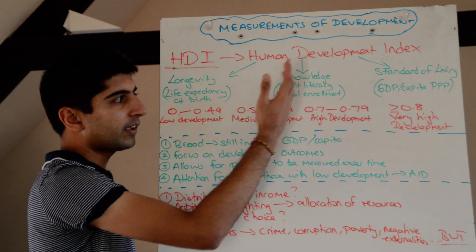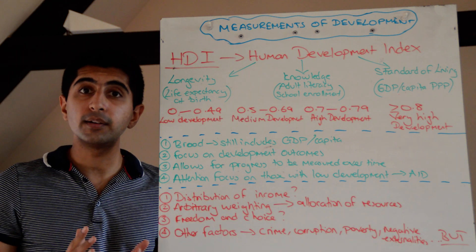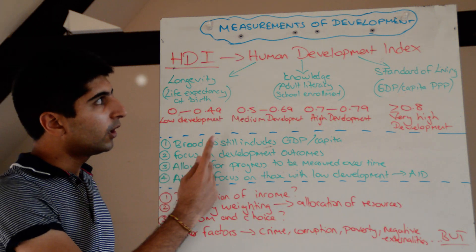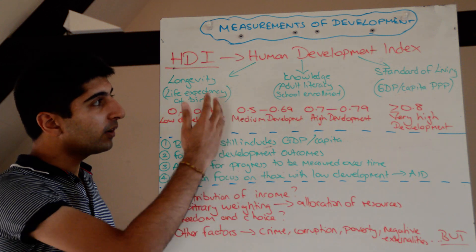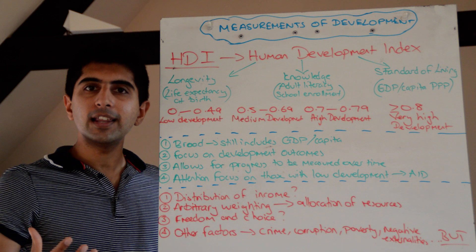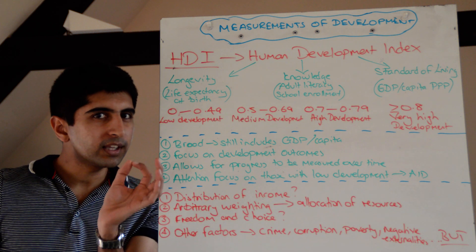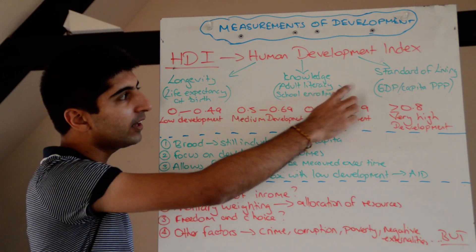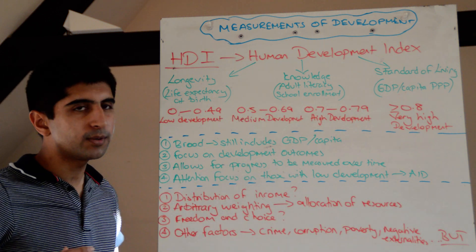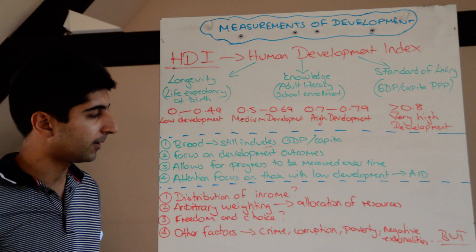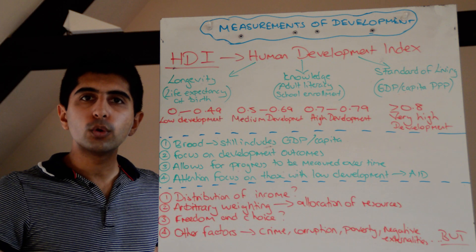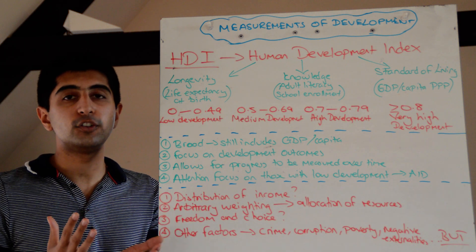Understanding what the HDI is, what it measures, and how to interpret the numbers, we now need to consider why the HDI is a good measure of development. The arguments in favour are that it's a broad measure — not just one factor or one key area of development, but three different ones, previously considered single indicators, now brought together into one key measurement. It still includes GDP per capita, and it focuses on development outcomes such as adult literacy, school enrolment, and life expectancy, which you could argue is a major benefit.